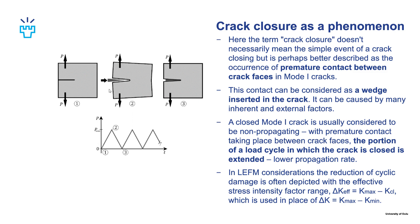This is a schematic illustration of the principle idea of this phenomenon. When the crack is open, there are some mechanisms that behave like a wedge inserted in the crack, and once the crack closes, contact will happen through this wedge sooner than before, and this will reduce the cyclic damage that the crack tip sees.